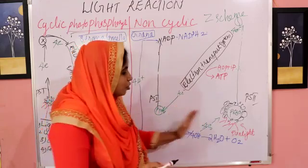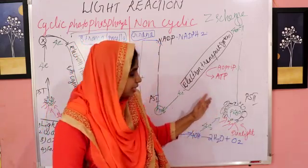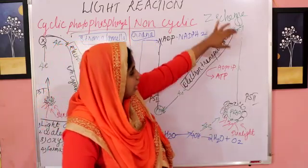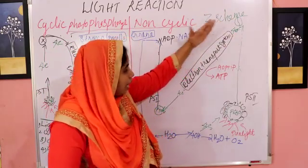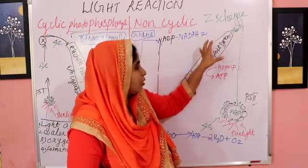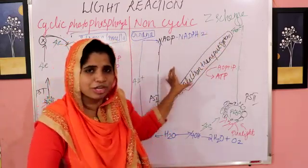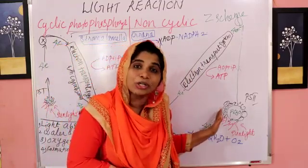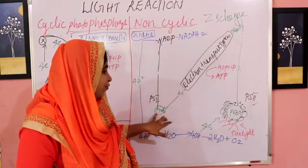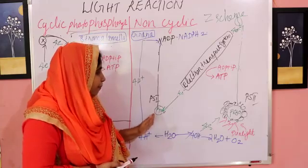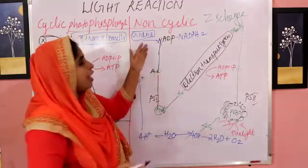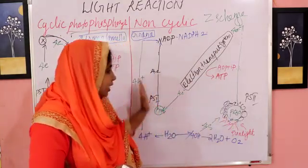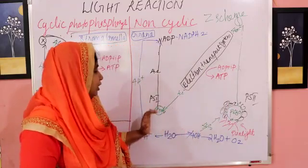First, Photosystem 2 is activated — P680. Photosystem 2 is activated and high energy electrons are emitted. Then electrons move through the electron transport system. That electron goes from P680 to P700. Then P700 electrons go to NADP.